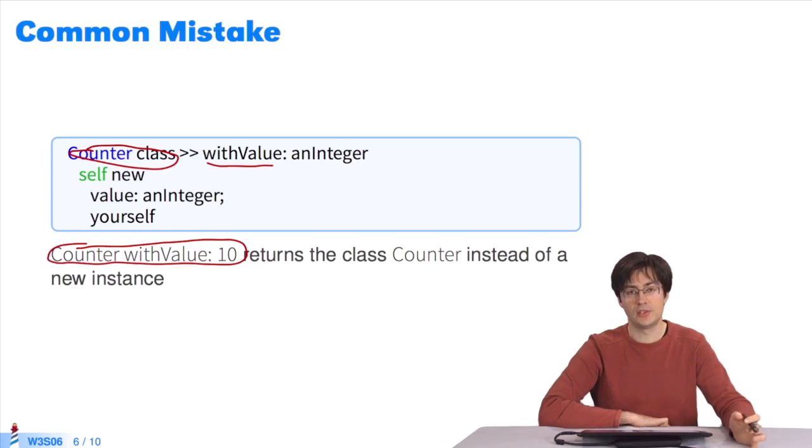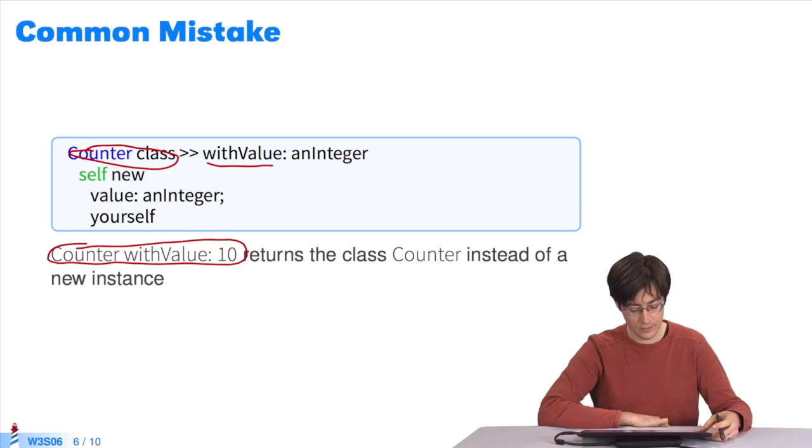If I evaluate this expression, I get the value counter, not a new counter. In fact, I get the class, not a new instance of this class. Why this mistake? What's the problem?